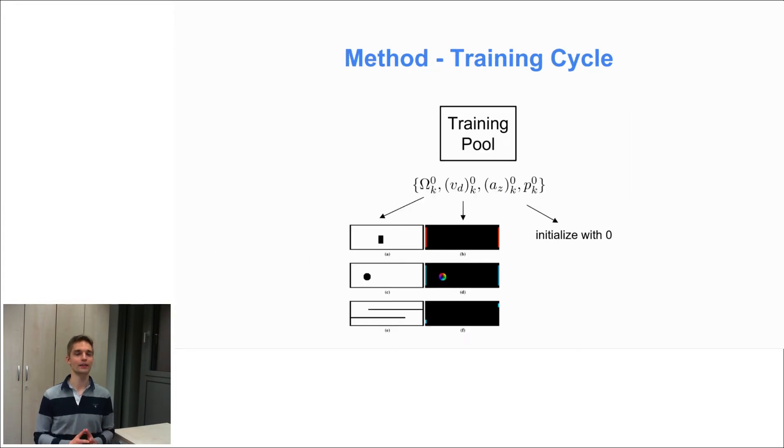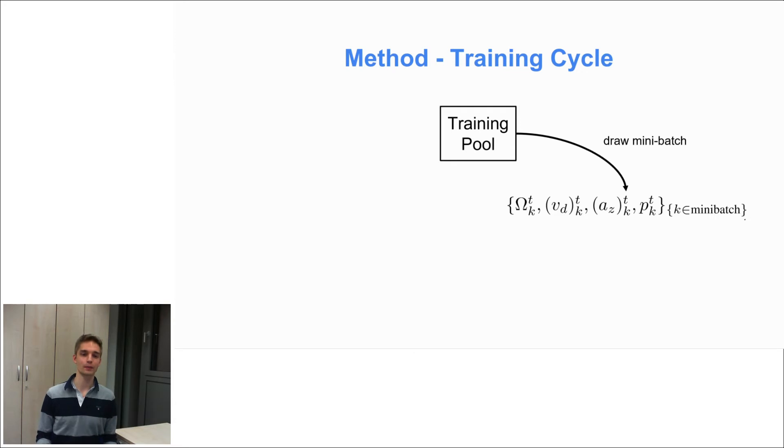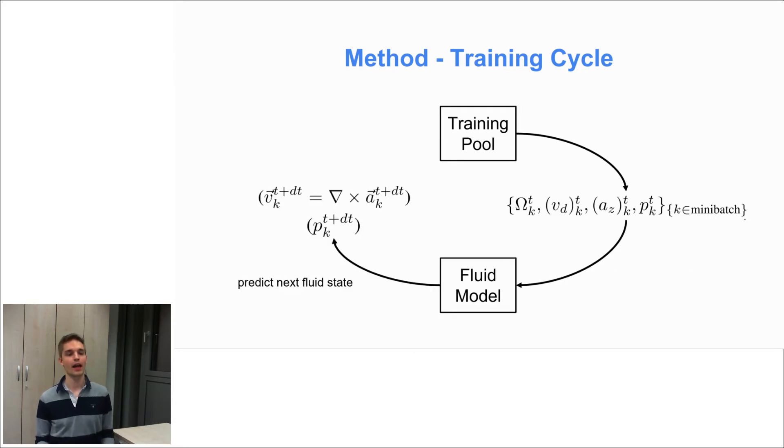Now I will explain how we can train our models without any training data beforehand. And therefore we first have to initialize a training pool with randomized domains and boundary conditions. And we can initialize our vector potentials and pressure fields with zero. Note, no groundtruth data is involved here.